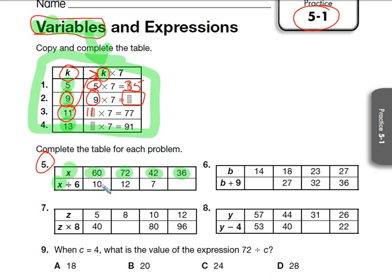So basically what we're doing on number five, boys and girls, is instead of saying x divided by 6, we're going to take the 60 for the first column and plug that in for x. So 60 divided by 6 equals 10. And we can check that by saying 10 times 6 equals 60. We know that.